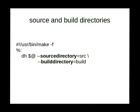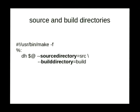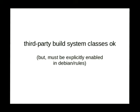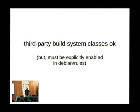The other nice thing about build system support is Modestas went in and taught all the dh_auto commands how to build from a different source directory and how to build into a different build directory, assuming the build system supports it. Autoconf supports this; Perl build and that kind of thing don't. If it is supported, you can build in a different directory and just nuke it easily at the end. Third-party build systems can be added by writing another Perl module.